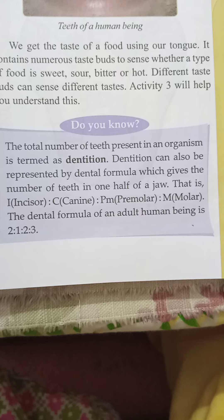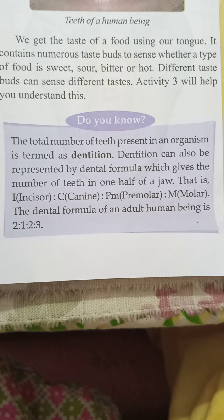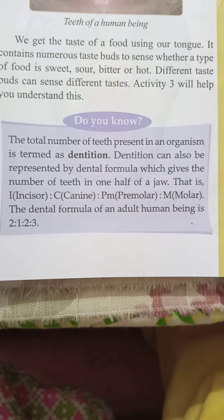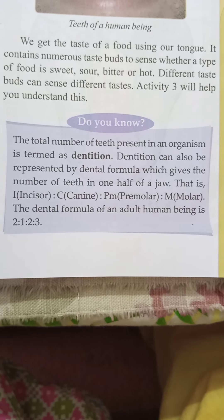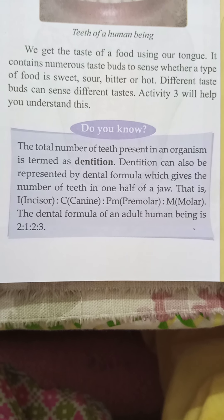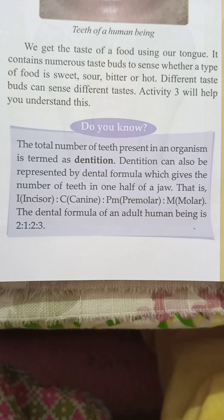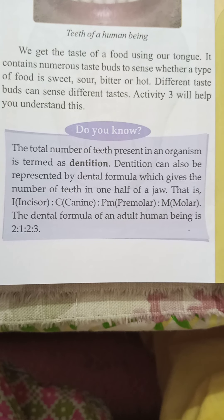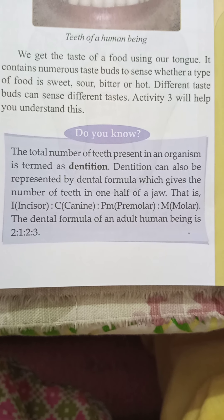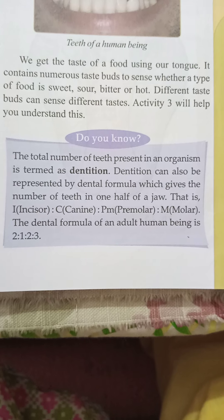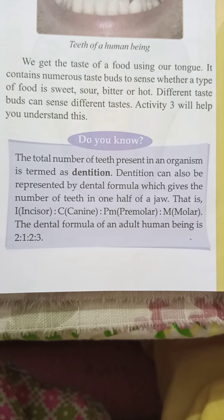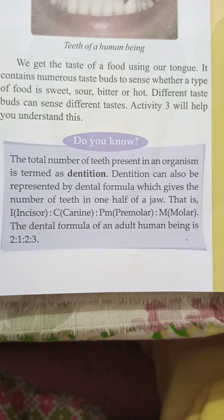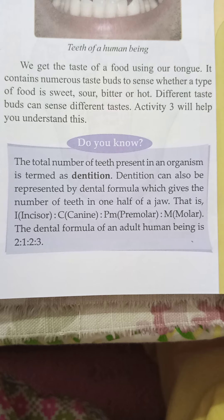The total number and arrangement of teeth present in an organism is termed dentition. Dentition can also be represented by a dental formula, which gives the number of teeth in one half of a jaw. The dental formula is: I (incisor), C (canine), PM (premolar), M (molar). The dental formula of an adult human being is 2:1:2:3.